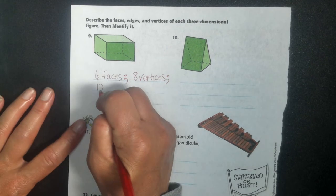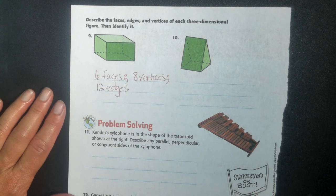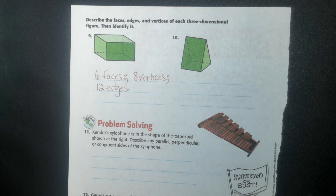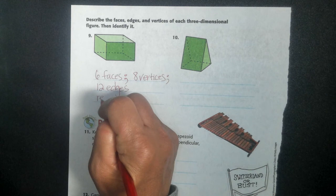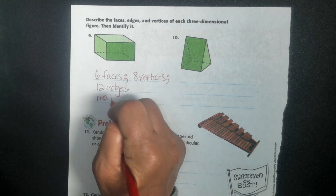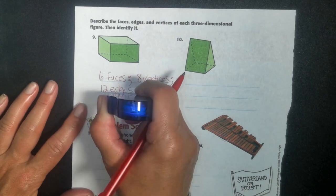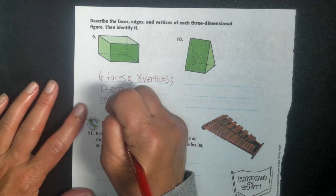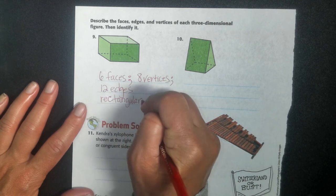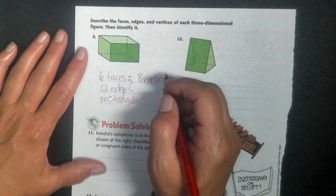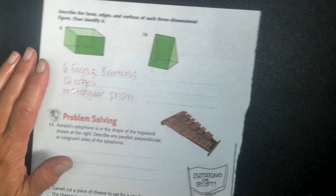So it has twelve edges, so we could look back on our pages and remember what the definition of these prisms were, but hopefully you remember the rectangular. I call these three-dimensional shapes prisms. It's a rectangular prism.